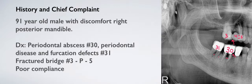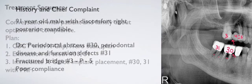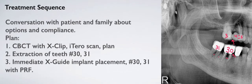He also has a fractured bridge in the maxillary area 3 through 5. Of significance are his issues with compliance — he has a difficult time getting to the dentist and would like to take care of treatment as expeditiously as possible. His family was with him, and everybody agreed to have everything done on the same day.